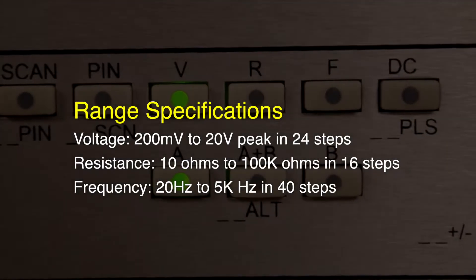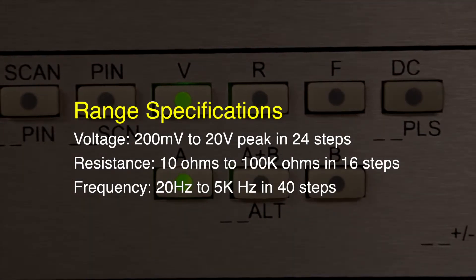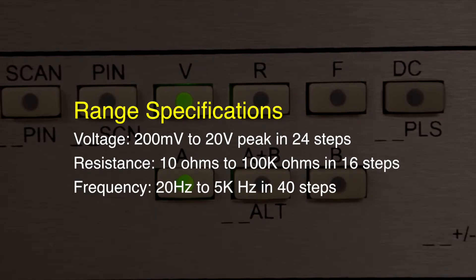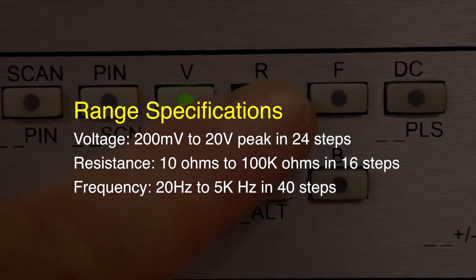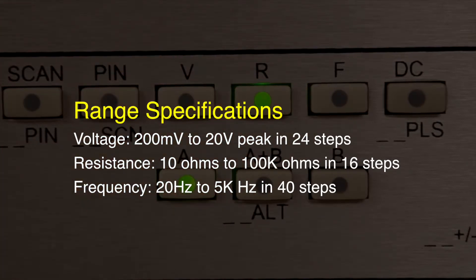Voltage varies from 200 millivolts to 20 volts peak in 24 steps. Resistance is variable in 16 steps from 10 ohms up to 100k ohms. Frequency can be set from 20 hertz to 5 kilohertz in 40 steps.